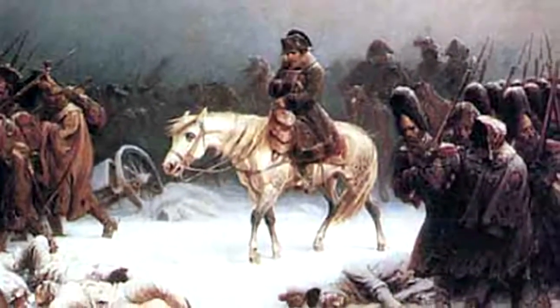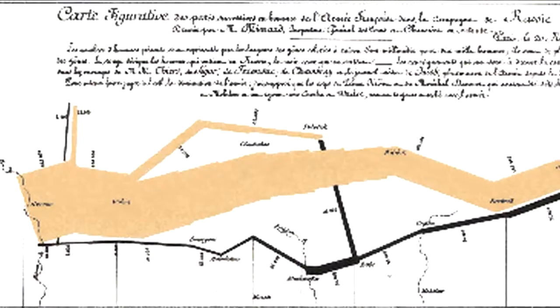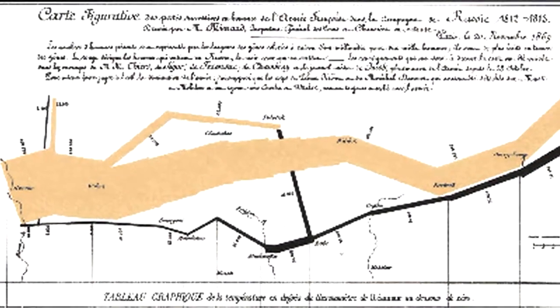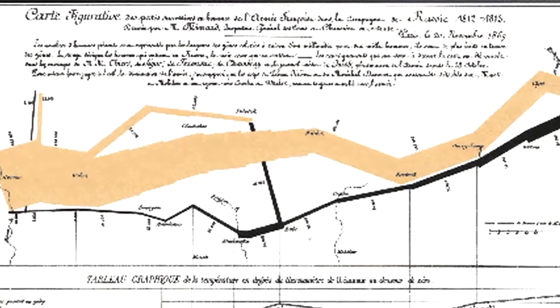The data on soldiers and food and killed in battles and temperature was well documented by Napoleon's quartermasters. And the numbers are mind-numbing until they were woven together to tell the story in visual terms that showed the scope and drama of the war.